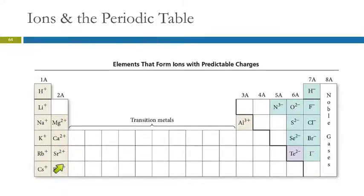Group two, these guys form plus two ions. Over here, aluminum is a group three metal. It forms a plus three.